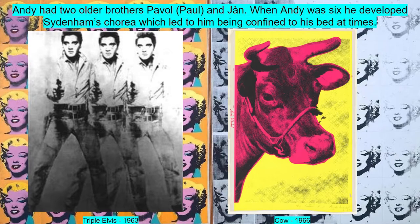When Andy was six, he developed Sydenham's chorea, which led him to be confined to his bed at times. While he was stuck in bed, he would listen to the radio and collect pictures of movie stars. This had a profound influence on his work later in life.